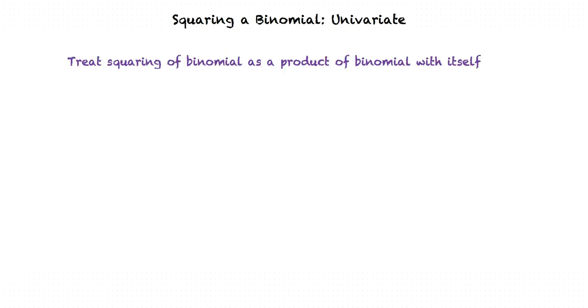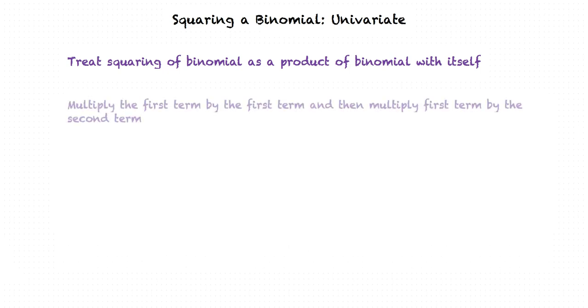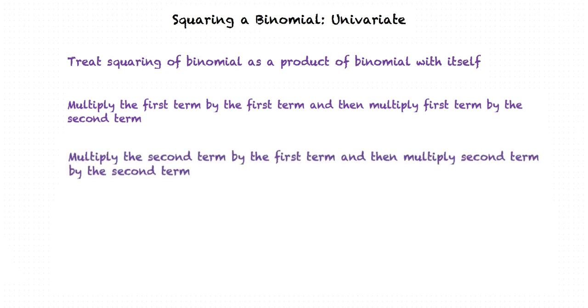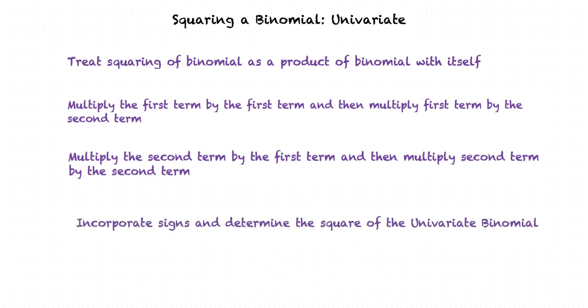In order to square a univariate binomial, we treat it as a product of the binomial with itself. We multiply the first term by the first term and then multiply the first term by the second term. Next, we multiply the second term by the first term and then multiply the second term by the second term. We incorporate appropriate signs and finally determine the square of the univariate binomial.